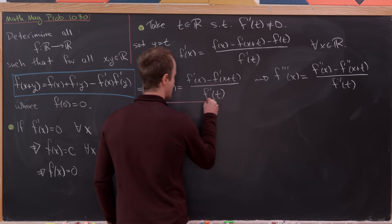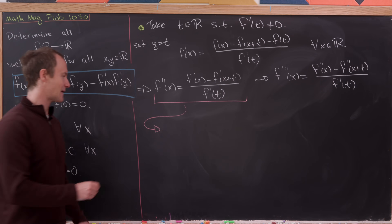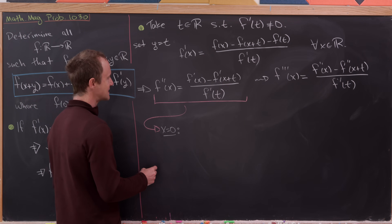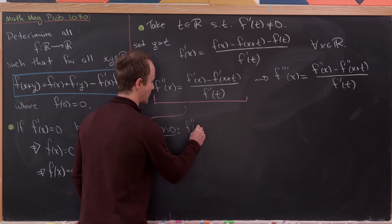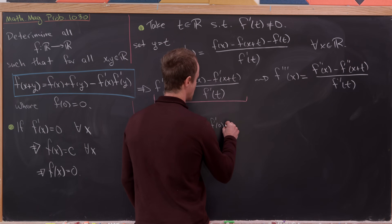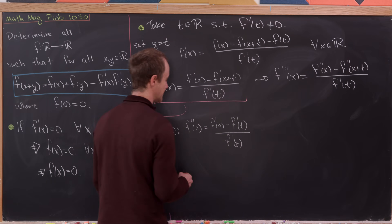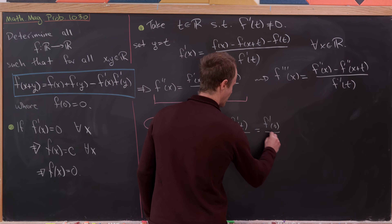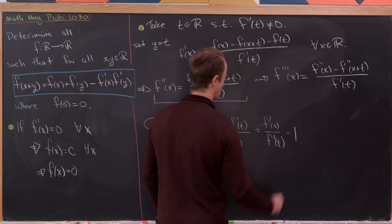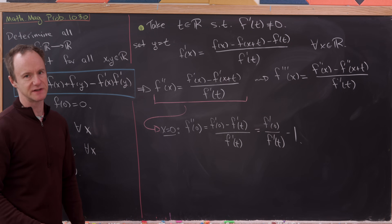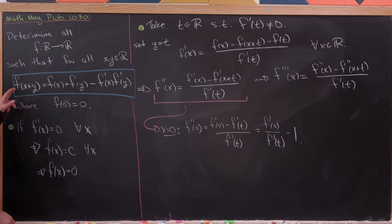Let's use the f''(x) equation and set x equal to zero. Setting x=0 gives f''(0) = [f'(0) - f'(t)] / f'(t), which equals f'(0)/f'(t) - 1. So f''(0) really depends on f'(0). But observe that if we set x=y=0 in the original equation, we can pretty quickly find f'(0).